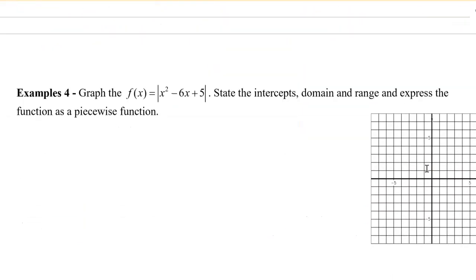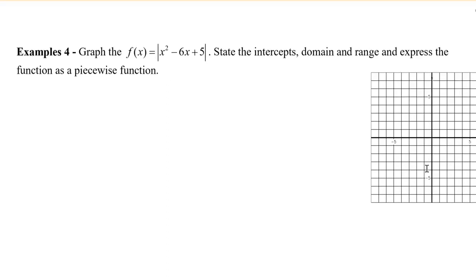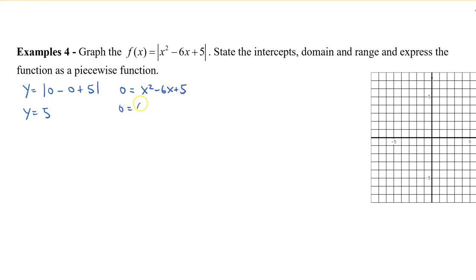Let's take a look at one more example and do this all together. We're going to graph the absolute value of this quadratic, find the intercepts, domain and range, and write it as a piecewise. Starting with the y-intercept: we have 0 minus 0 plus 5, so the y-intercept is 5. For the x-intercepts, we set this equal to 0 and have x squared minus 6x plus 5. We're in luck because this is factorable — we get x minus 5 times x minus 1, so x equals 5 and x equals 1. So we have our three intercepts.